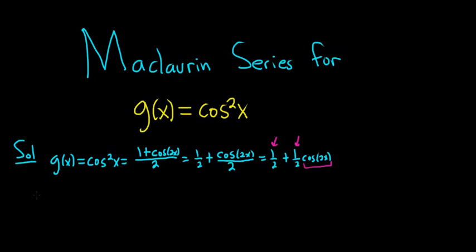So the Maclaurin series for cosine x is equal to the infinite sum, and n always starts at 0, so it goes from 0 to infinity. And you have negative 1 to the n, and cosine is an even function, so you always have even powers of x. So 2n, 2n is always an even number. And then here you have 2n factorial.